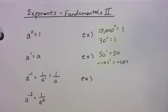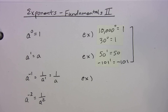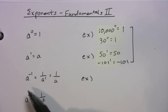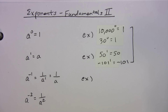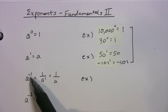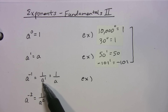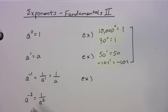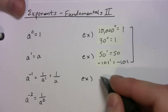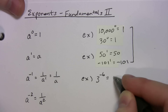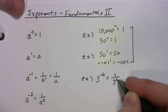What about negative exponents? Those tend to confuse students. These two rules right here you should have down. A to the negative one equals one over a to the one, which is just one over a. The negative exponent is telling you: put it in the bottom and raise it to the positive exponent. A to the negative two is one over a squared. Let me just do some examples — three to the negative six is one over three to the sixth power.